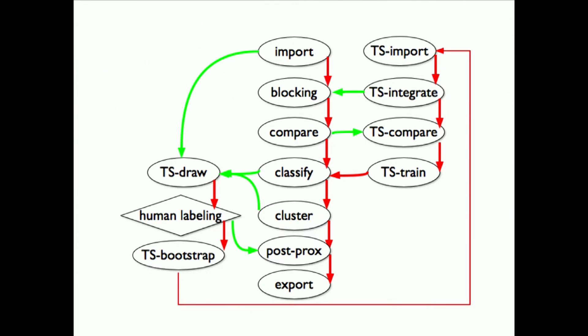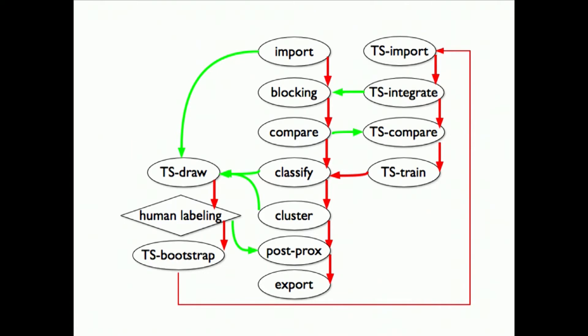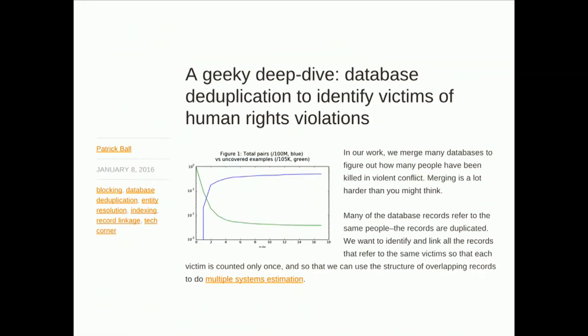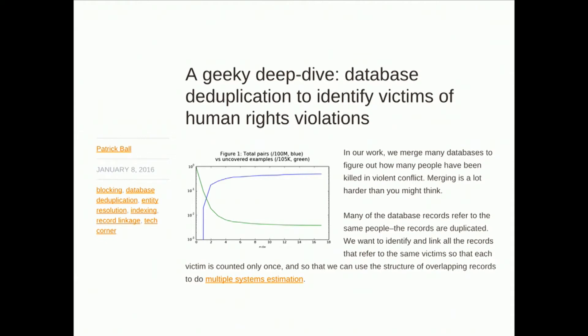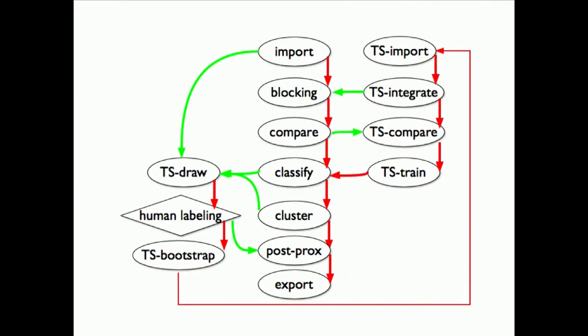What we do is supervised record linkage. All the symbols on the outside — everything that starts with TS for training set — is data that goes out for human review. Everything down the middle is what we automate and code and rely on computers to help us do. If you want to get into some of the more technical details, we've been building out the tech corner on our website. Last year Patrick wrote a geeky deep dive on some of our blocking techniques. Last summer he also wrote about clustering and solving the right problem — he describes, as I'm sure all of us have experienced, really enthusiastically solving the wrong problem multiple times before you find the right one. But I'm just going to focus today, very briefly, on compare and classify, kind of in the middle of this diagram.